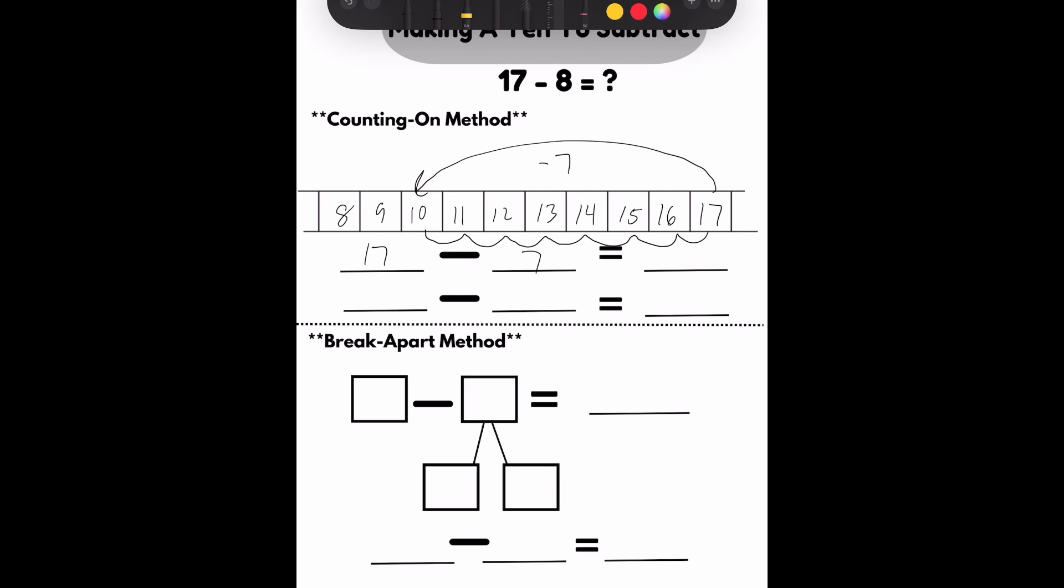17 minus 7. We know makes 10. That's where we landed. I only went back 7. I still need to go back 1 more. I'm at 10. I've got to go back 1 more. If I go back just 1, I am at 9.